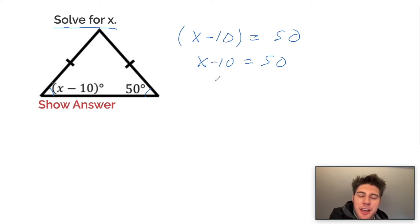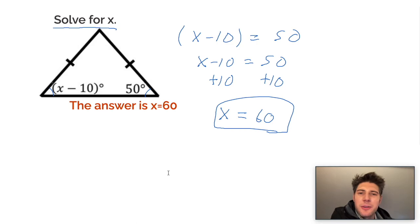Right now there's a minus 10. The way we undo a minus 10 is adding 10, which leaves us x on the left side and 50 plus 10 is 60. So the answer to this one should be x equals 60. And we can check it. And it says the answer is x equals 60.